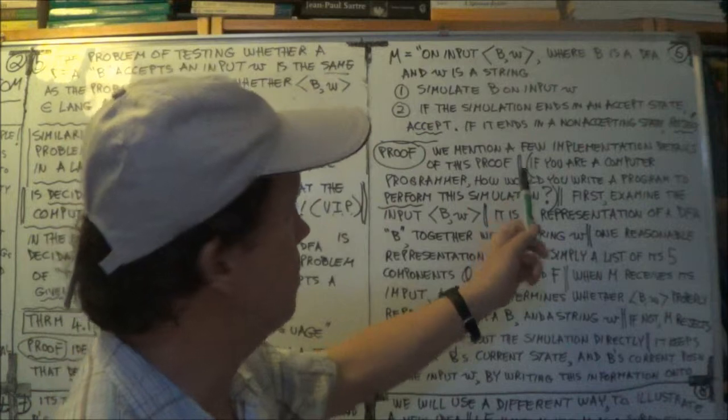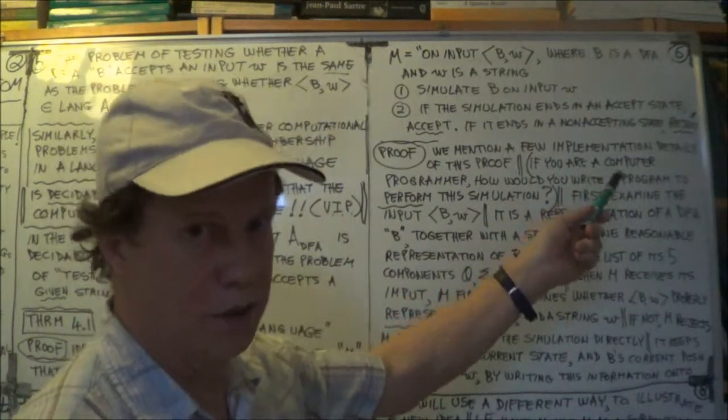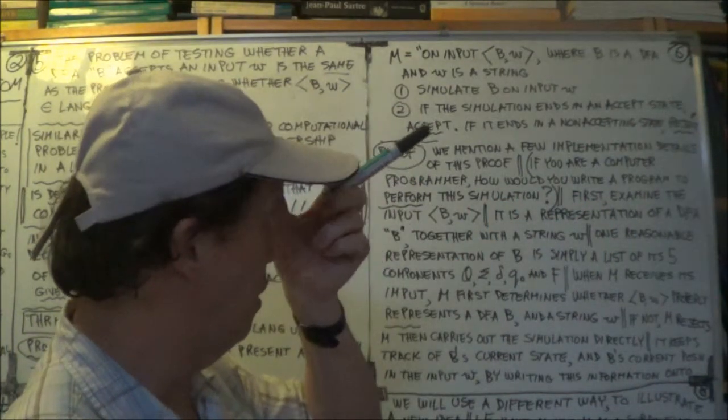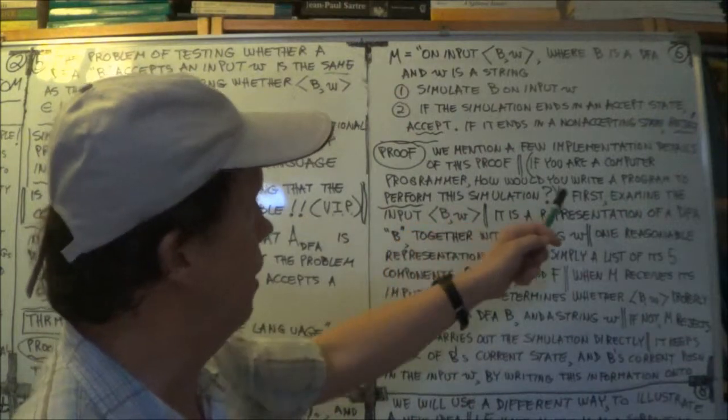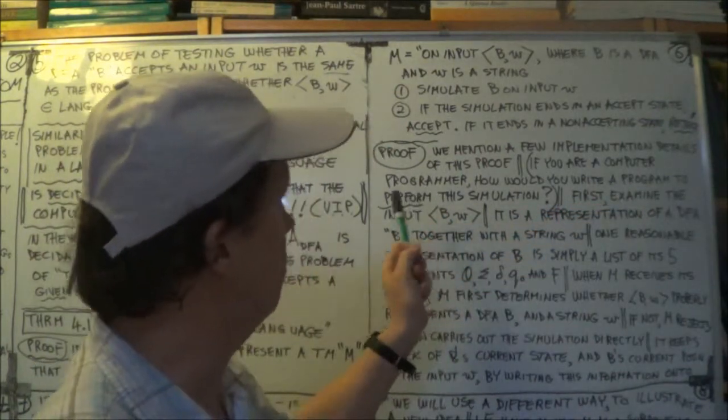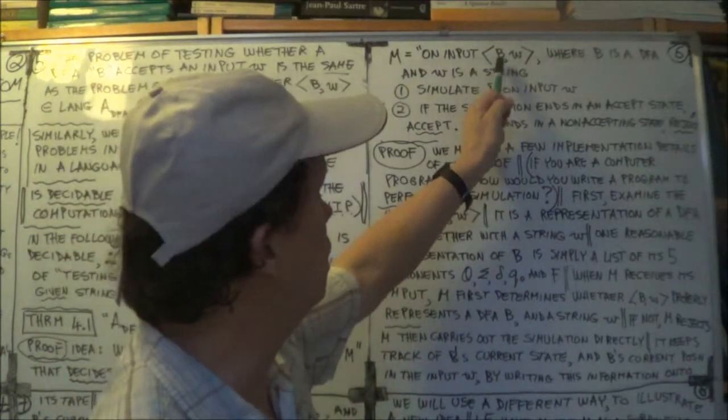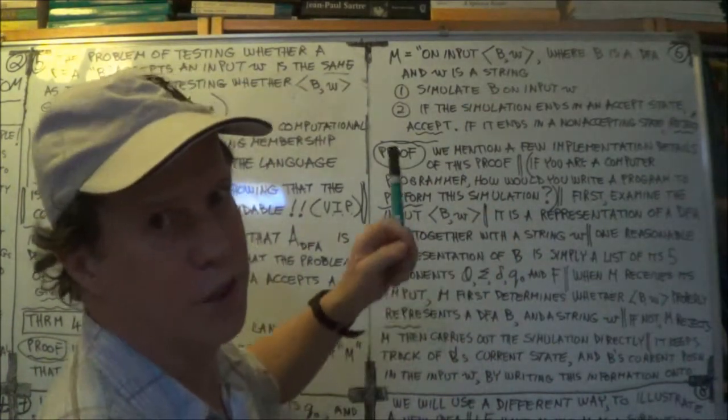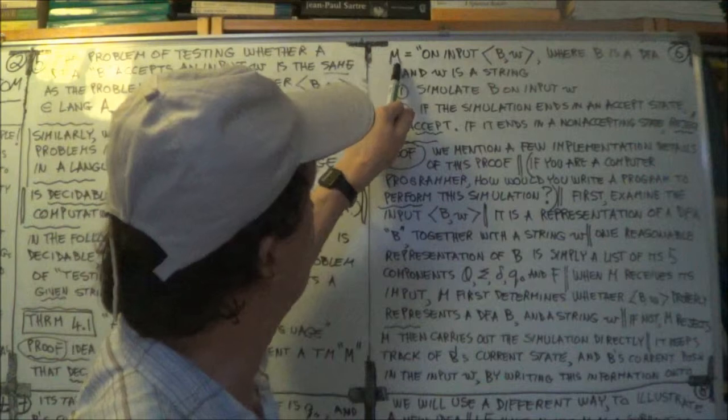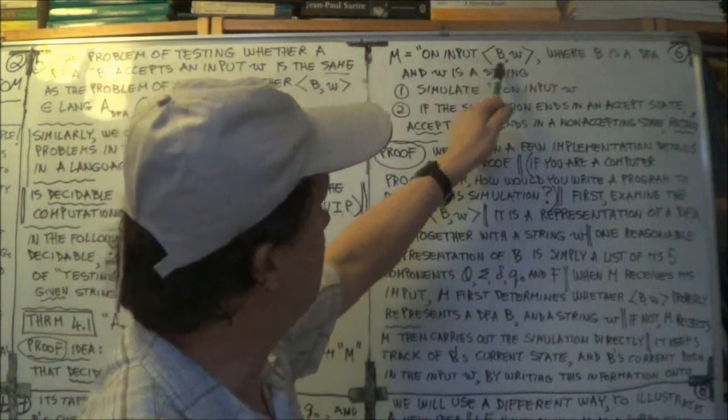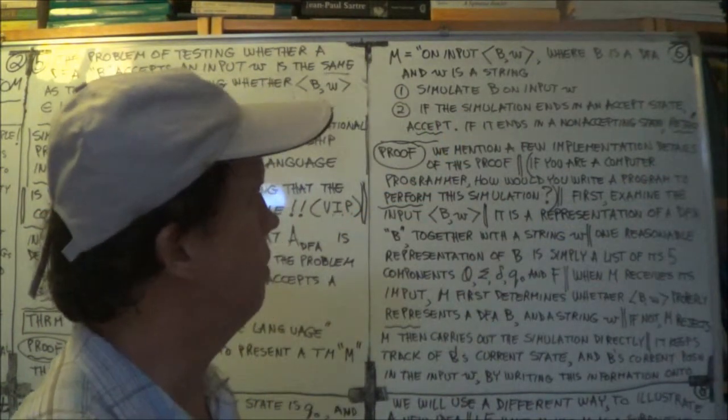So this is a bit of a misnomer. And Sipser is asking, so imagine you're the computer programmer, so how would you write a program to perform this simulation? How would you simulate this machine B? So imagine yourself as usual, imagine yourself you're the Turing machine, and you're trying to simulate this B, so how would you do that?